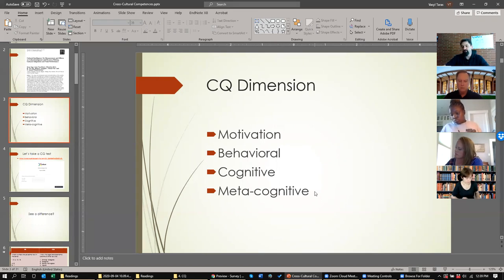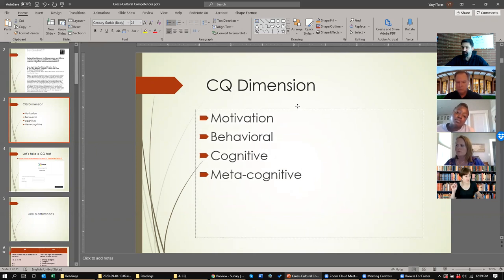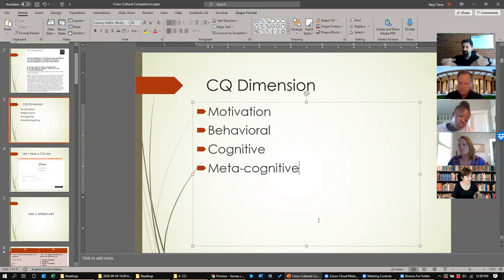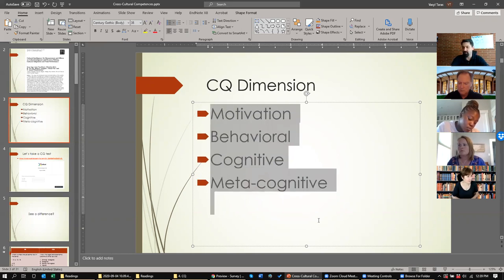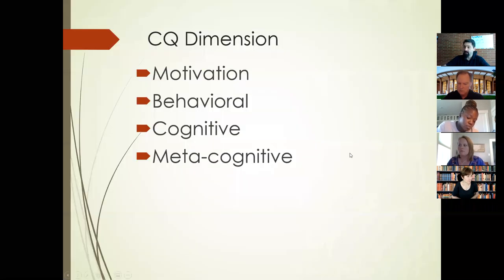Other models include additional dimensions such as awareness — are you aware that differences between cultures exist? — or denial versus acceptance — do you accept that we are different and need to be treated differently? Some models hold that greater acceptance of differences leads to better cross-cultural effectiveness, though that remains an open question.